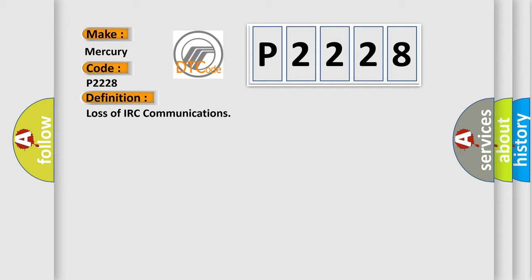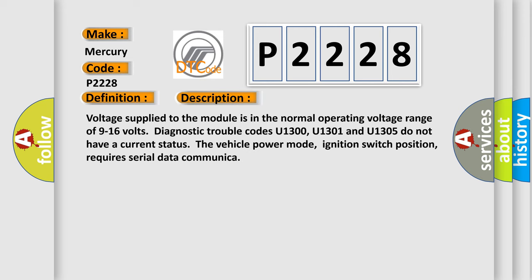And now this is a short description of this DTC code. Voltage supplied to the module is in the normal operating voltage range of 9 to 16 volts. Diagnostic trouble codes U1300, U1301, and U1305 do not have a current status. The vehicle power mode, ignition switch position, requires serial data communication.